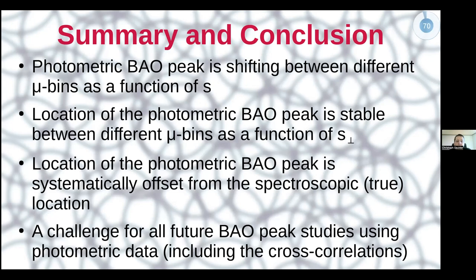So now we are essentially at the end of the talk. What do you want to take home from this? We know that the photometric BAO peak is shifted for different mu bins as a function of s. However, the location of the photometric BAO peak is stable between the different mu bins if you measure it as a function of s orthogonal. So this is some news from essentially last year. However, the really important thing now which might mess up a lot of things is that the location of the photometric BAO peak is systematically different from the spectroscopic, the true location. And this has to be considered in all future BAO peak studies, including the cross correlations, and it will be a challenge. We are currently working on properly quantifying it and giving you a way to do it and get some scientific data still from the photometric BAO peak data. And yeah, any questions?